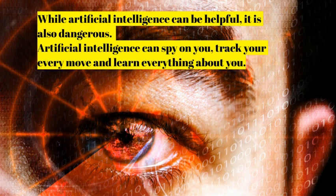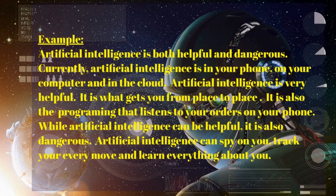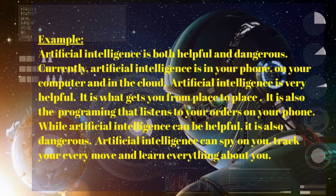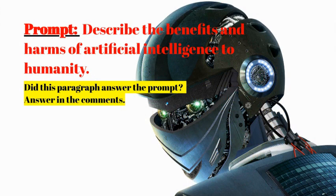While artificial intelligence can be helpful, it is also dangerous. Artificial intelligence can spy on you, track your every move, and learn everything about you. Put it all together in a paragraph. Example: Artificial intelligence is both helpful and dangerous. Currently, artificial intelligence is in your phone, on your computer, and in the cloud. Artificial intelligence is very helpful — it is what gets you from place to place, and also the programming that listens to your orders on your phone. While artificial intelligence can be helpful, it is also dangerous — it can spy on you, track your every move, and learn everything about you. Prompt: Describe the benefits and harms of artificial intelligence to humanity. Did this paragraph answer the prompt? Answer in the comments.